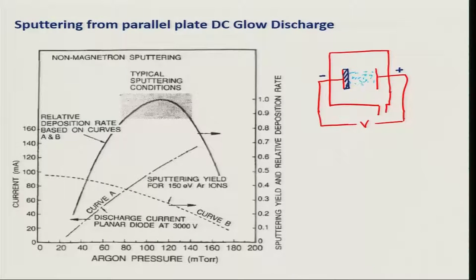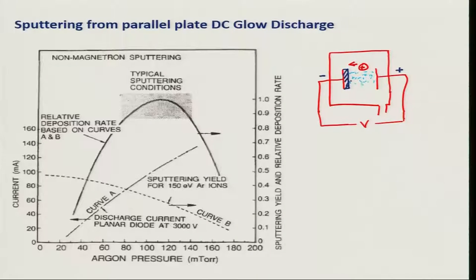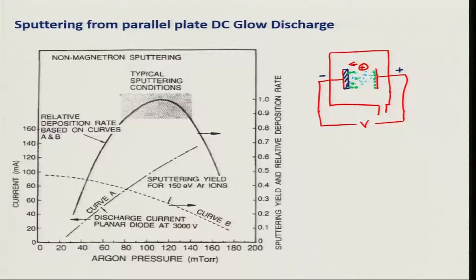We will have plasma in between — different regions: cathode dark space, cathode glow, and negative glow. These are the essential parts of plasma. If the distance is very large you can also have a positive column. In this geometry, the positive ions are accelerated towards the target or cathode, resulting in the sputtering process. The sputtered atoms coming out from the surface of the target will have some kinetic energy, travel some distance, and form a thin film layer at the substrate.